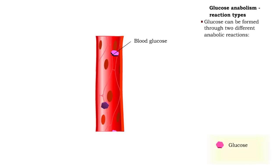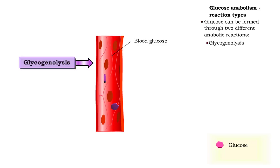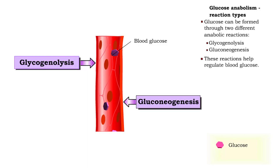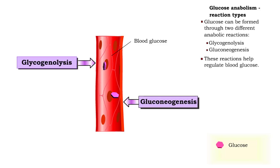Glucose can be formed through two different anabolic reactions: glycogenolysis and gluconeogenesis. These reactions help to regulate blood glucose.